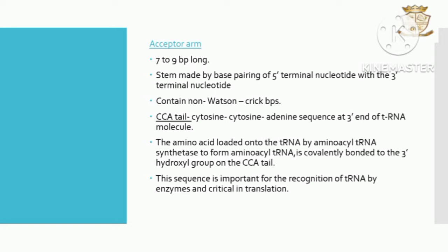The acceptor arm consists of a CCA-tail. The CCA-tail is the cytosine-cytosine-adenine sequence at the 3' end of the tRNA molecule. The amino acid is loaded onto the tRNA by aminoacyl-tRNA synthetase, forming aminoacyl-tRNA. This sequence is important for recognition of tRNA by the enzyme and is critical in translation.